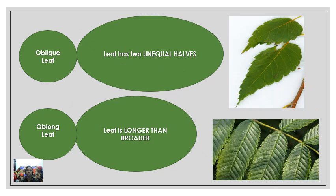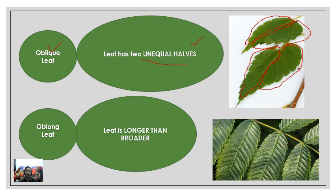This is the oblique leaf. If you notice, this part of the leaf is larger and this part is comparatively smaller. In the same way this part is smaller and this part is larger — two unequal halves are produced, and such a leaf is called an oblique leaf.